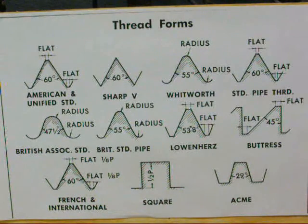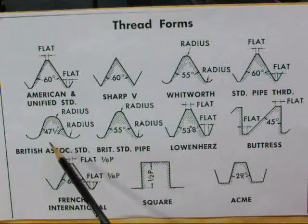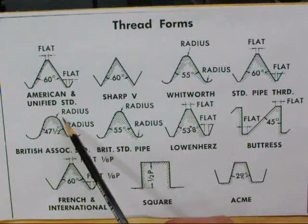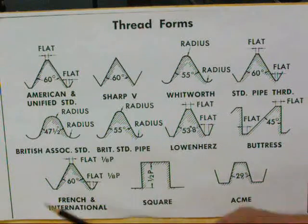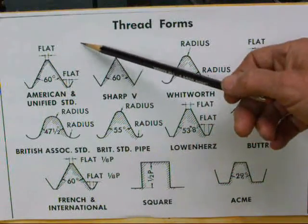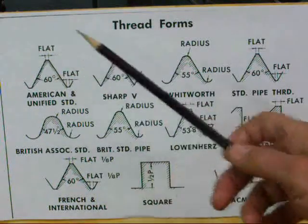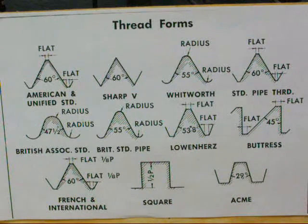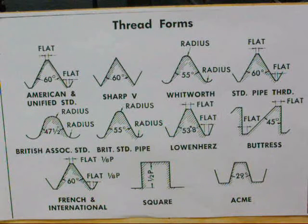Here's a review of common thread forms. The sharp V is no longer used. There's the BA, or British Association, used on small models. There's the Whitworth 55-degree, the pipe thread, the buttress thread, the square, and the Acme. Our unified system in the United States is 60 degrees — it doesn't come to a sharp point; it's slightly flat on the top and the bottom. We have the Unified National Coarse, which used to be called United States Standard, and the Unified National Fine, which used to be called SAE — and some old-timers still call them SAE threads.